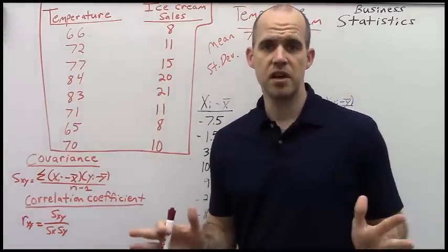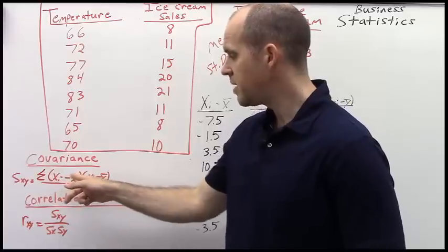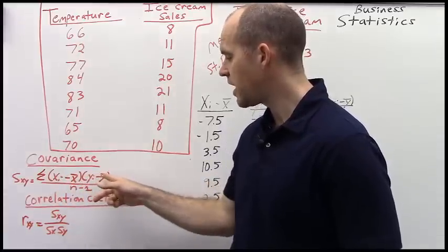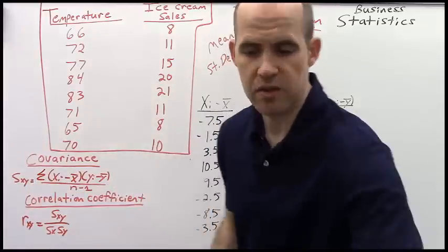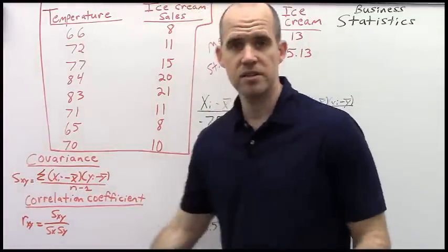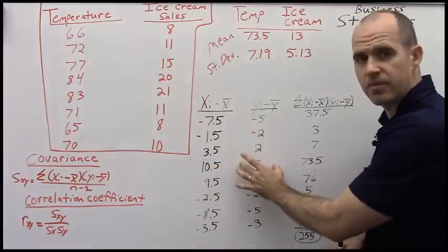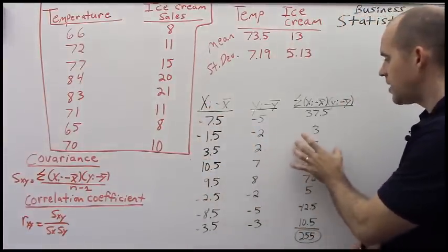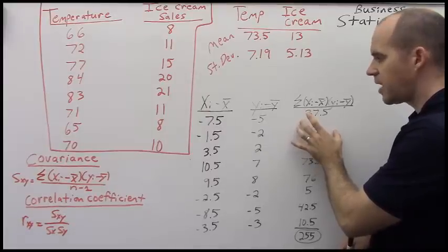So what do we need to know in order to figure this out? First of all, we need to know our xi minus x bar times our yi minus y bar. And then we're going to add those up. We're going to summarize those. Now, to save some time, I went ahead and did this. So we've got our xi minus x bar column, our yi minus y bar column, and then the sum of xi minus x bar times yi minus y bar.